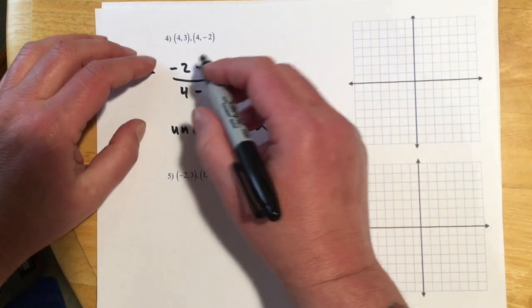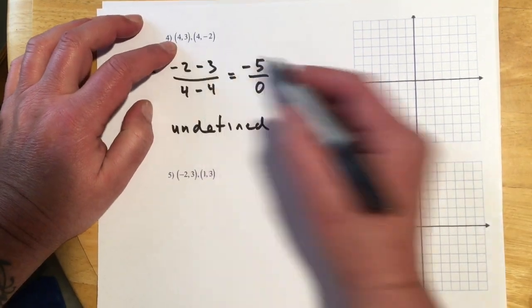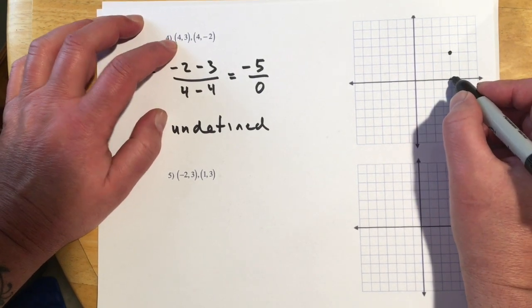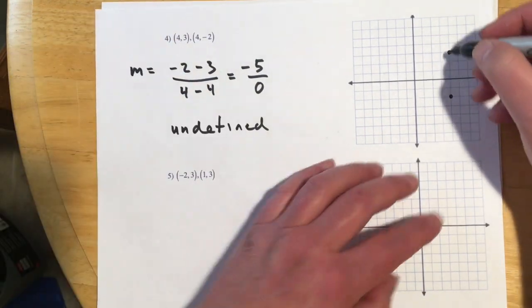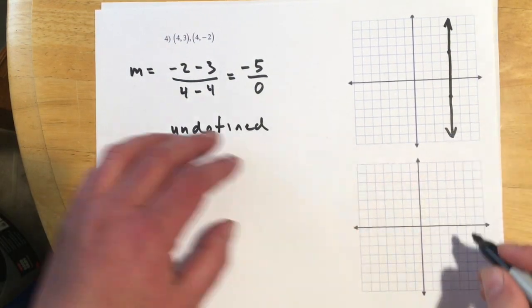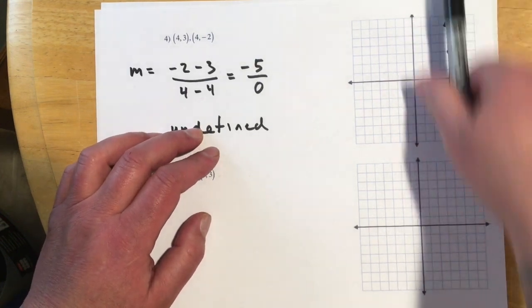So this would be y2 minus y1, so negative 2 minus 3 over 4 minus 4. So something strange is happening, which is I'm getting this division by 0. And remember, division by 0 is undefined. And so the slope does not exist. So what would that look like if we graphed it? So we'd have x is 4, y is 3. And when x is 4, so you can see it's not a function, y is negative 2.